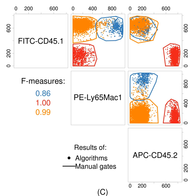The data generated by flow cytometers can be plotted in one or two dimensions to produce a histogram or scatter plot. The regions on these plots can be sequentially separated, based on fluorescence intensity, by creating a series of subset extractions termed gates. These gates can be produced using software such as FlowJo, FCS Express, WinMDI, Cytopaint, Venturione, Celsion, CellQuest Pro, Cytospec, Calusa, or FloCore.